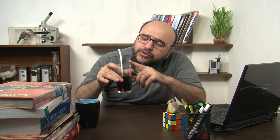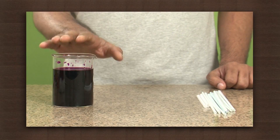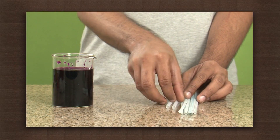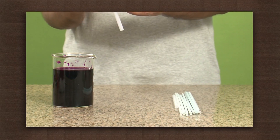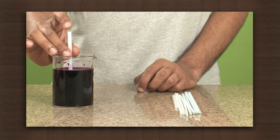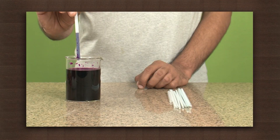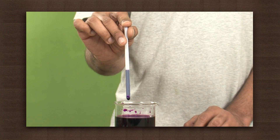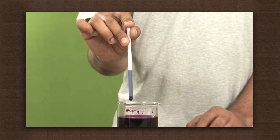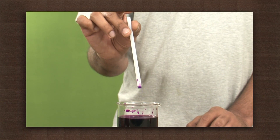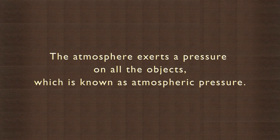As I was sipping this drink using the straw, the atmospheric pressure was pushing the drink into my mouth. Let us try to understand atmospheric pressure. We need a beaker with coloured water and some thick straws. Dip a thick straw in the coloured water, then cover the open end of the straw with a finger and lift the straw out of the water. The water remains inside the straw. The atmosphere exerts a pressure on all objects, which is known as atmospheric pressure.